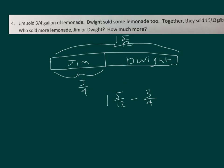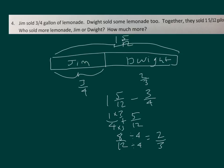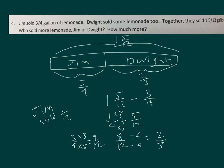We can subtract one minus three-fourths first to get one-fourth. So we have one-fourth plus five-twelfths — converting to twelfths: three-twelfths plus five-twelfths, which is eight-twelfths. Simplifying by dividing by four equals two-thirds. So Dwight sold two-thirds of a gallon. Comparing: three-fourths equals nine-twelfths, and Dwight is eight-twelfths. So Jim sold more — nine-twelfths minus eight-twelfths equals one-twelfth of a gallon more.